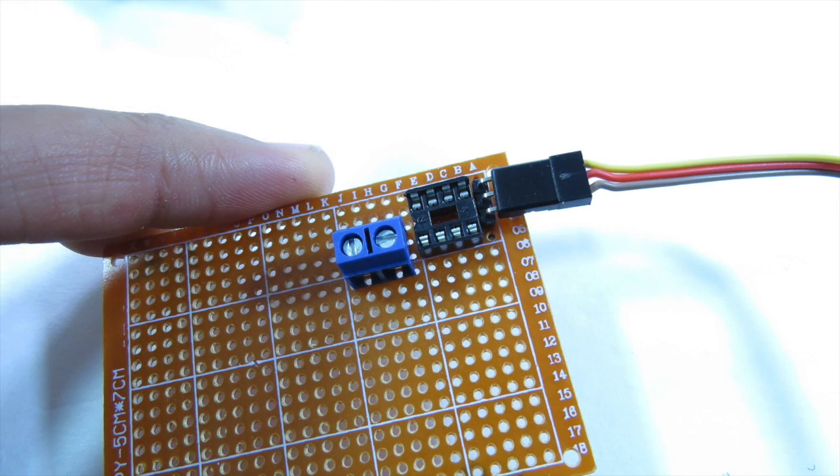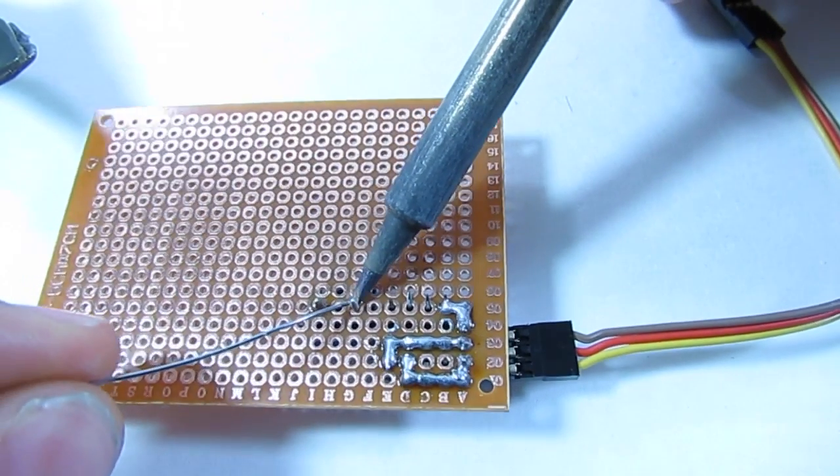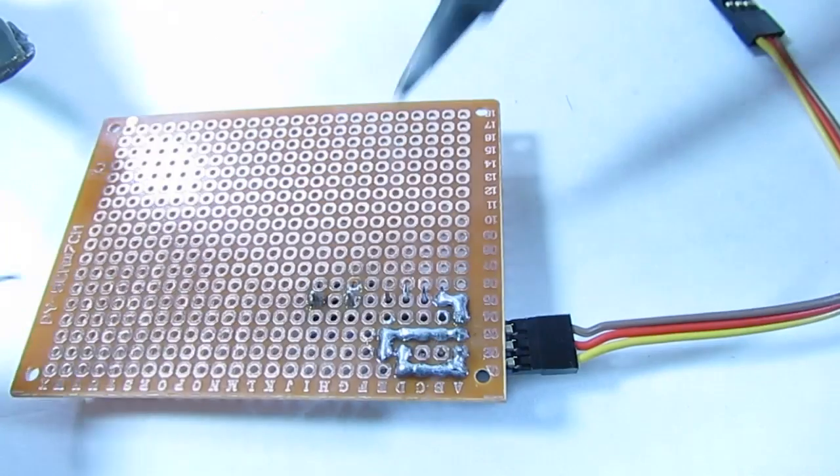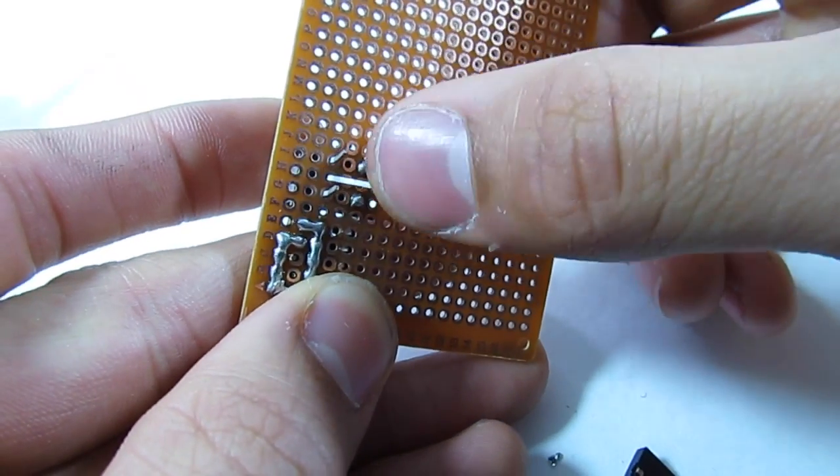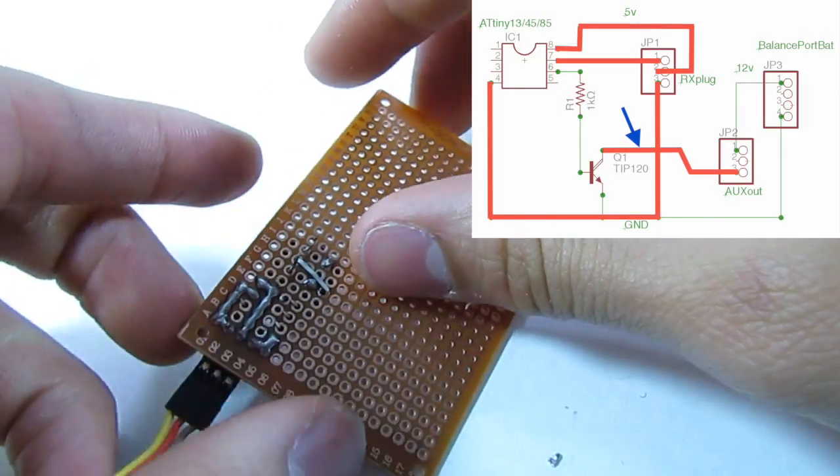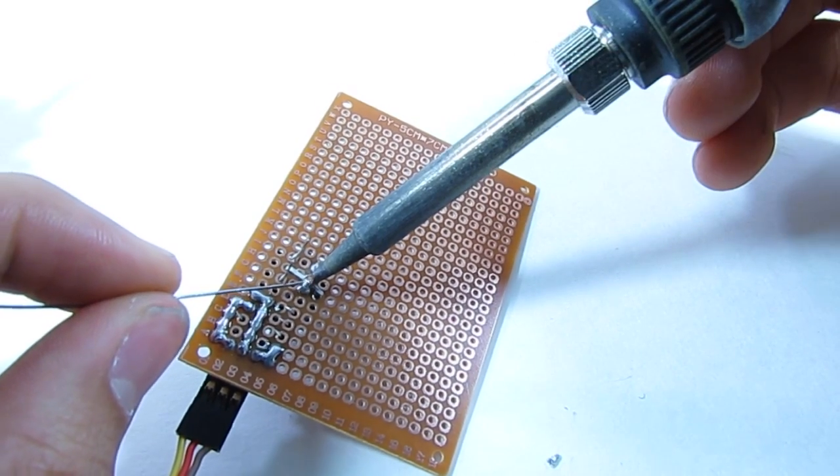Press the 2 pin screw terminal into the breadboard and solder it down. You may need to snip off the leads as they are quite long. Place the tip 120 transistor facing the 2 pin terminal on the PCB, and bend the collector over towards the pin on the 2 pin terminal that is closest to the circuit and solder those together.